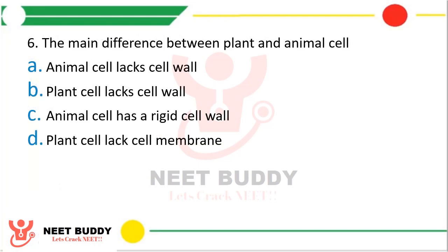Question number six. What is the main difference between plant and animal cell? Option A animal cell lacks cell wall, option B plant cell lacks cell wall. The correct answer is option A — animal cells lack cell wall.